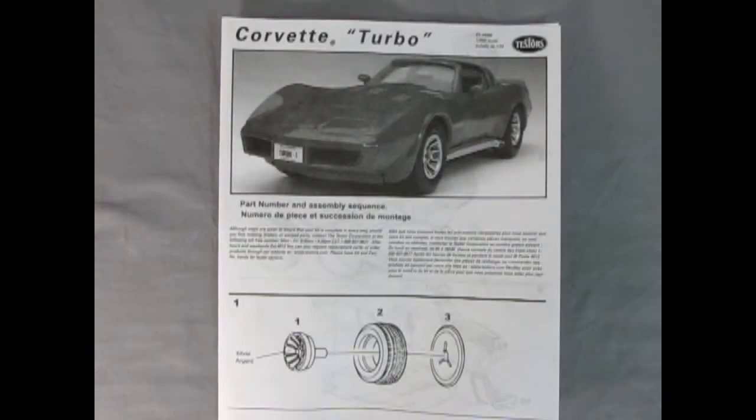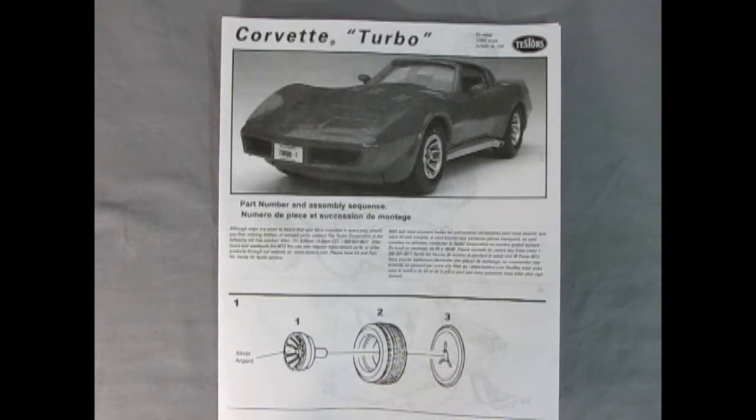So let Danny the dog now tell you about the instructions. So here we have some pretty bodacious instructions with our Corvette turbo right here. To begin with, we've got our wheels so they go into the tires with those nice wheel backs.